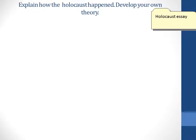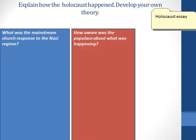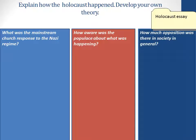Suppose you were writing an essay in which you were asked to explain how the Holocaust during World War II could possibly have happened. You might develop some sub-questions to help you unpack the bigger question, like: What was the mainstream church response to the Nazi regime? How aware was the populace about what was happening? How much opposition was there in society in general?